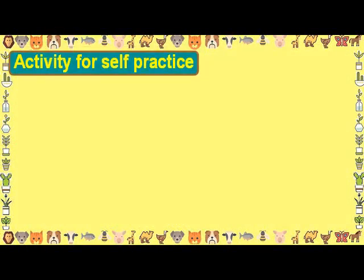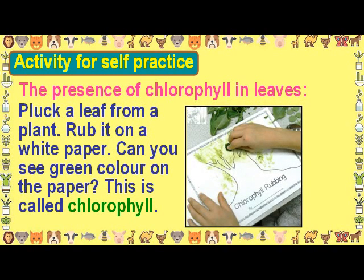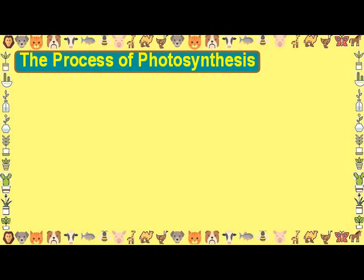Activity for self-practice — the presence of chlorophyll in leaves: pluck a leaf from a plant and rub it on a white paper. Can you see the green color on the paper? This green substance is called chlorophyll.